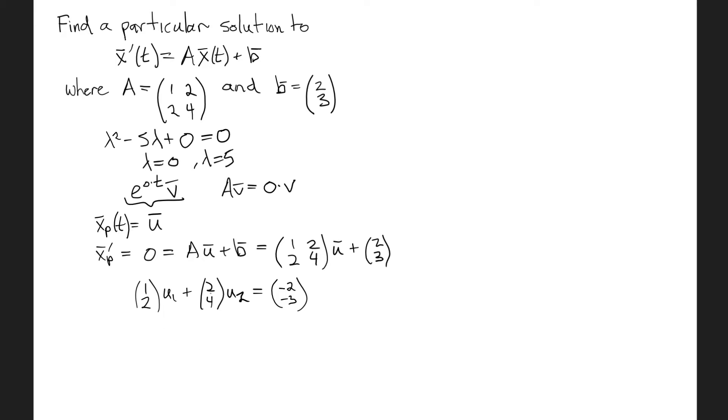Now these vectors, because the matrix is not invertible, these vectors are not independent. One is a multiple of the other. You'll notice that the second component in both is twice the first. So no matter what u1 and u2 values we use, we will always end up with a vector that has second component twice the first. This is not a vector of that form, so there is no way that we're going to be able to solve this.